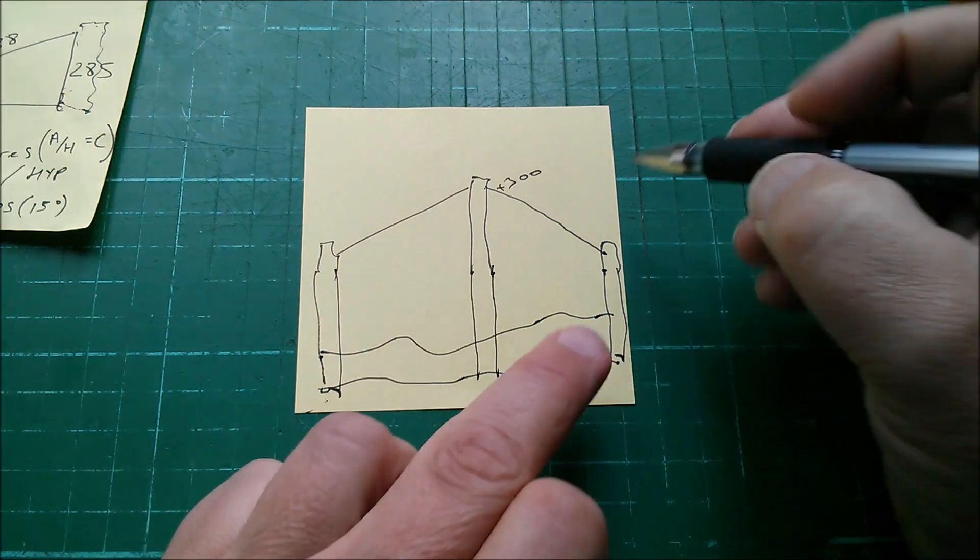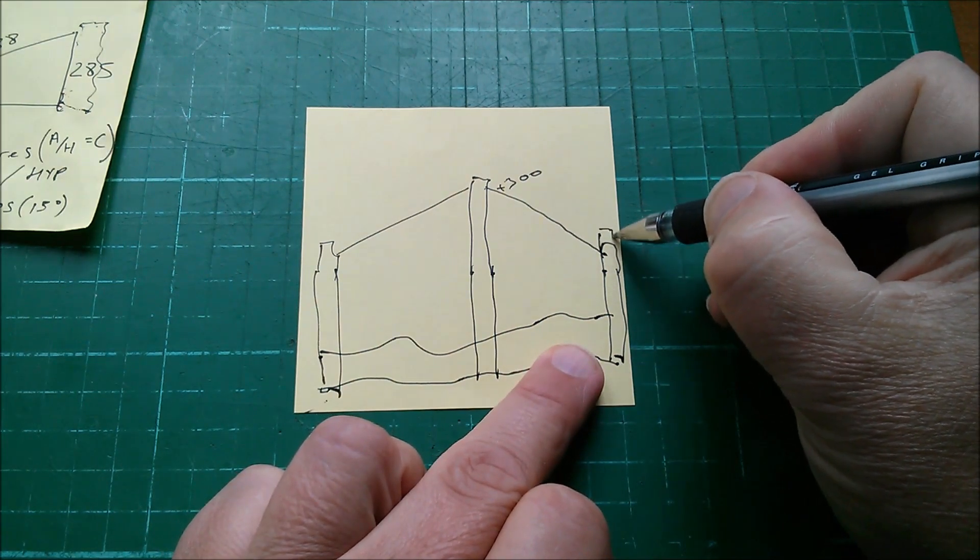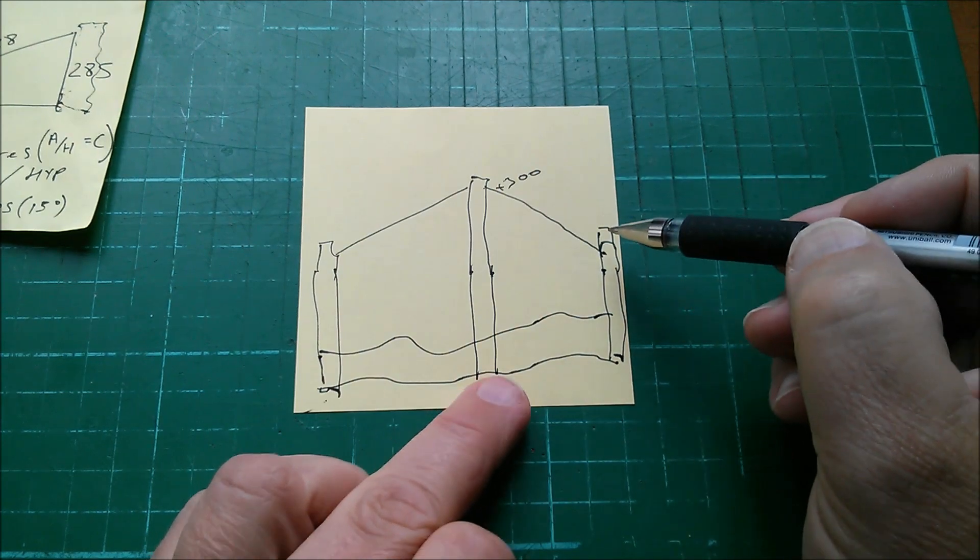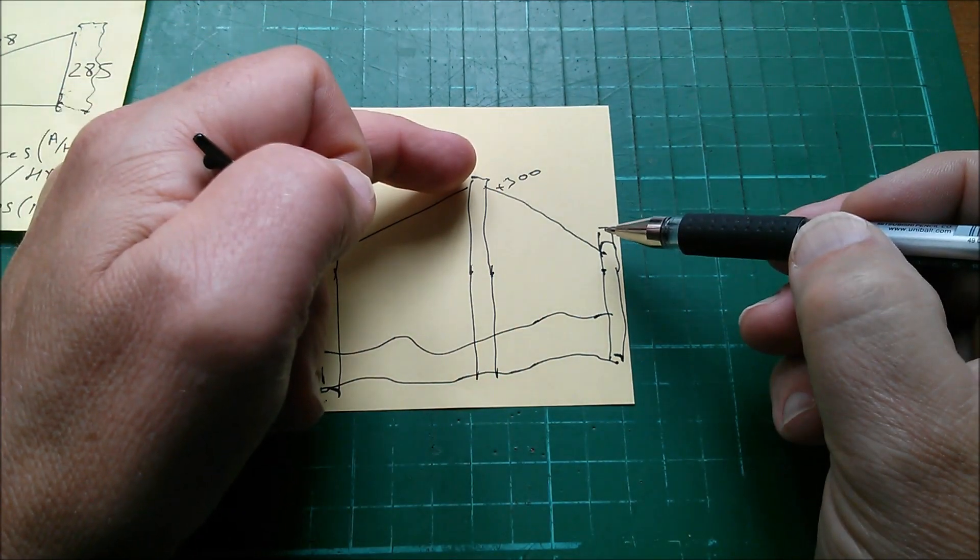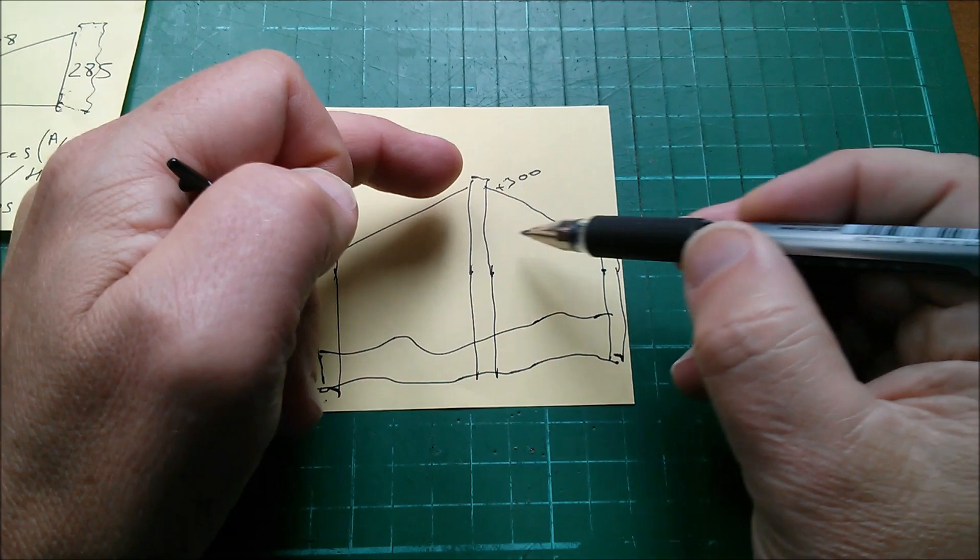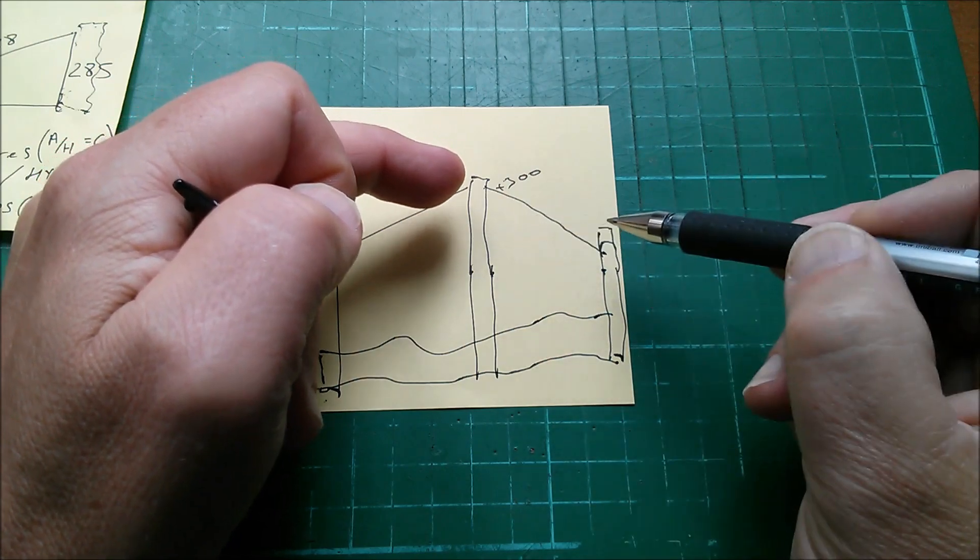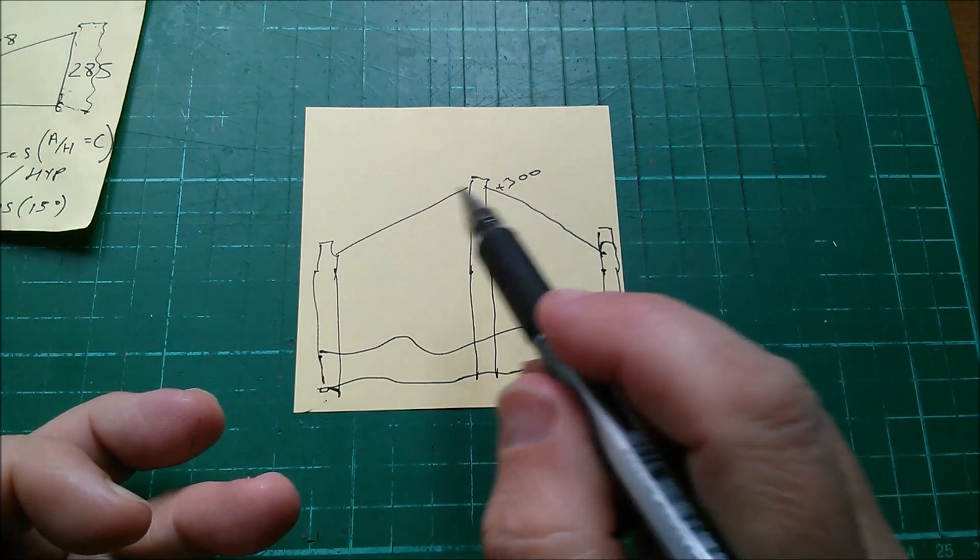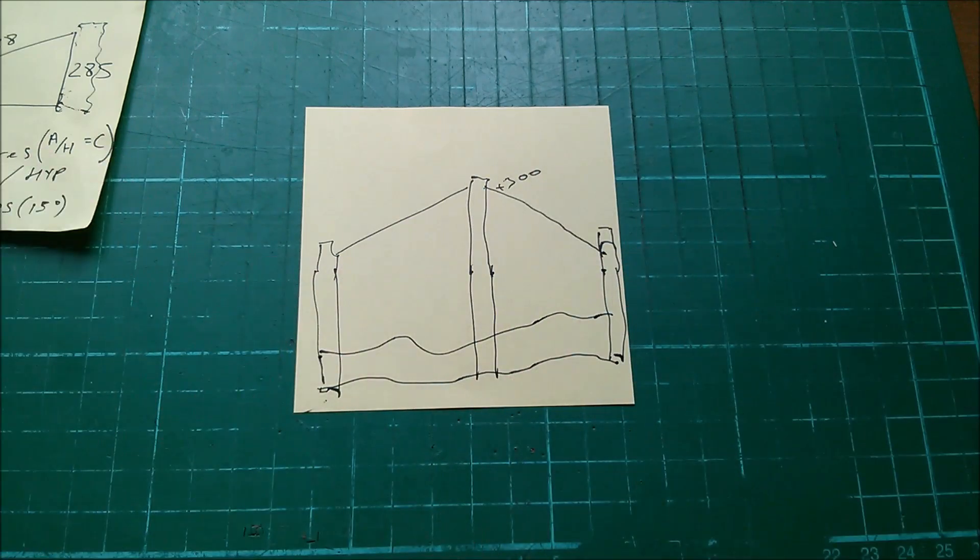Now because this ground is sloping upwards, this end post is actually going to be higher than this end post. And then I'll calculate an angle by measuring these two, measuring the height difference by putting a spirit level across there and calculate an angle and cut my rafters to that angle.